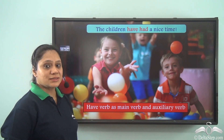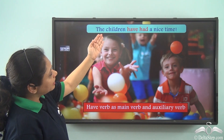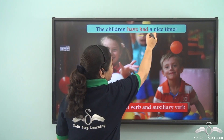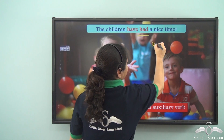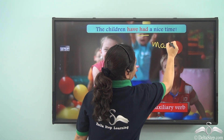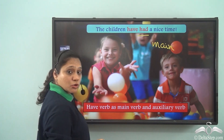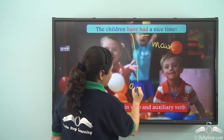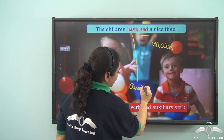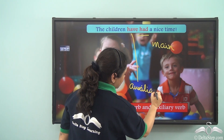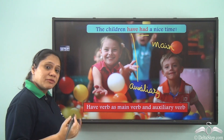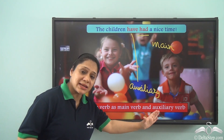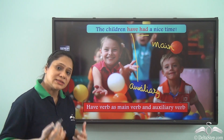Now let us look at this sentence: 'The children have had a nice time.' In this sentence, 'had' is used as the main verb showing the main action or expression, and 'have' is used as the auxiliary verb or helping verb. So we see that we can use 'have' both as the main verb and as an auxiliary verb in the same sentence.